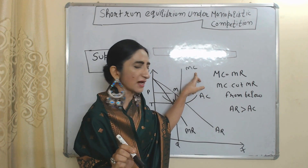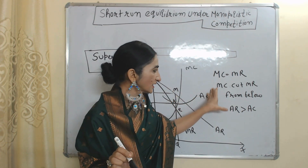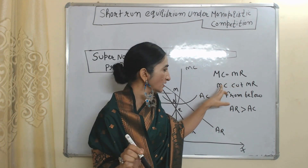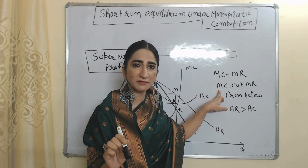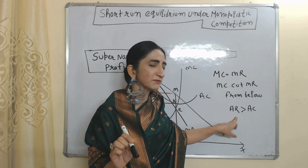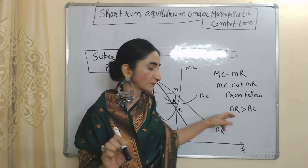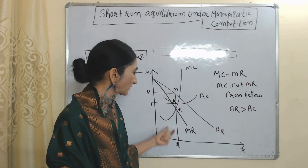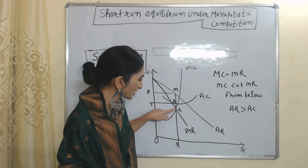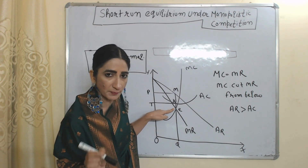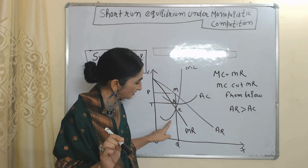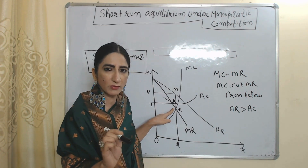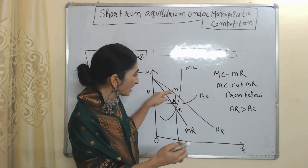There are three conditions for super normal profit: marginal cost is equal to marginal revenue; marginal cost cuts marginal revenue from below; and average revenue is more than average cost. The OQ amount of output gives us super normal profit. At point E, marginal cost is equal to marginal revenue and marginal cost cuts marginal revenue from below, so two conditions of super normal profit are satisfied.